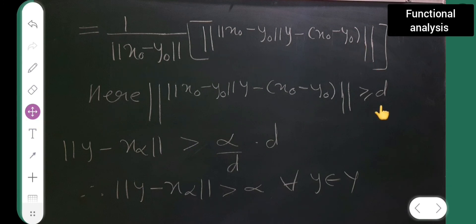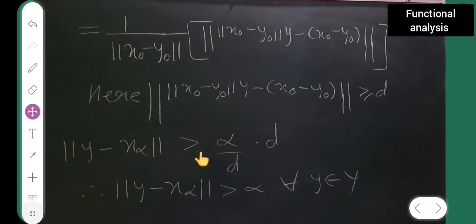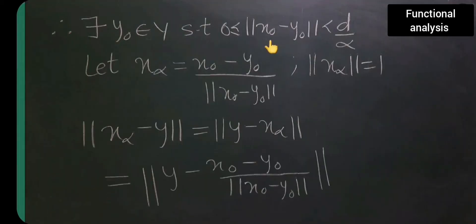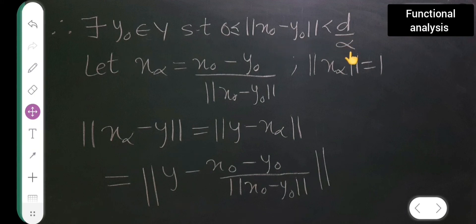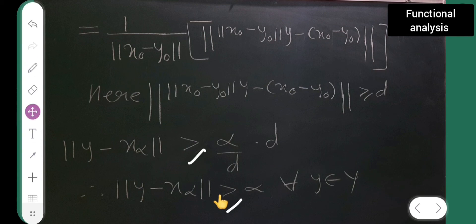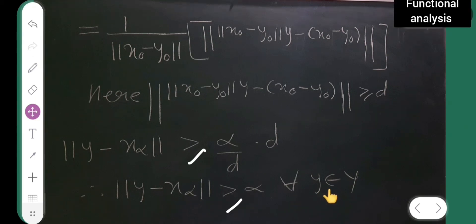This inner part — the norm of (x₀ minus y₀) times y minus (x₀ minus y₀) — is greater than or equal to d. And since the norm of x₀ minus y₀ is less than d upon α, the factor 1 upon the norm of x₀ minus y₀ is greater than α upon d. So substituting, the norm of y minus x_α is greater than or equal to α, for all y belonging to Y.